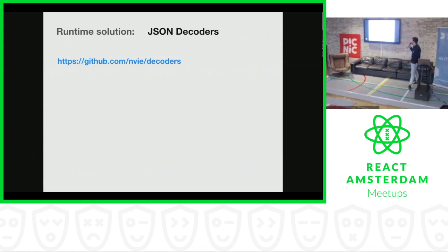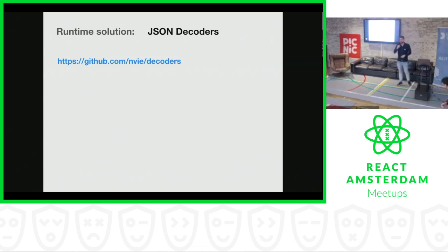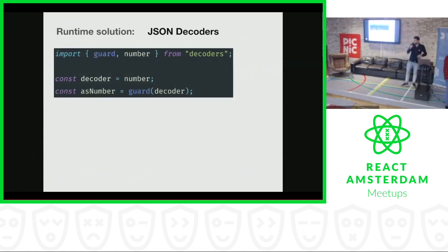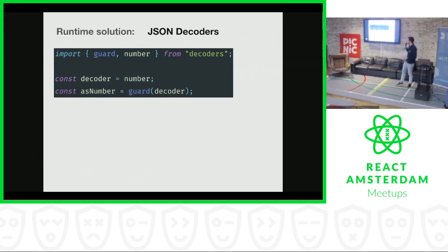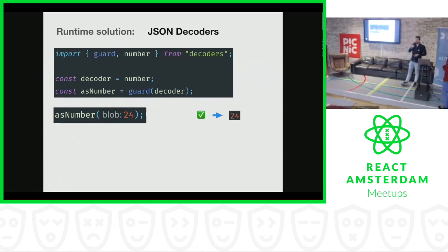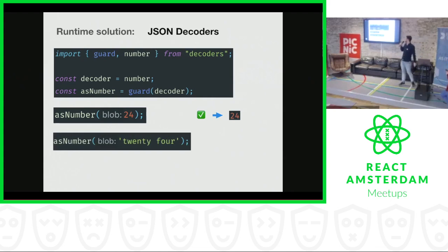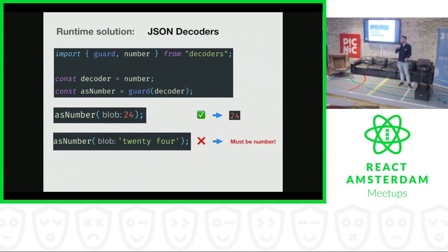For this talk, I'll be looking at the implementation by Vincent Driesen — a very nice Dutch guy who should work for Picnic. We really like his library. A simple example of how a JSON decoder works: we define the decoder first, and it's simply a decoder that checks whether the input is a number. If we use the decoder with an input of 24, it will be successful because it is indeed a number and it returns the number. But if I put in the string 'twenty-four', it will not pass — it will throw an error saying what was expected was a number, but it's not.